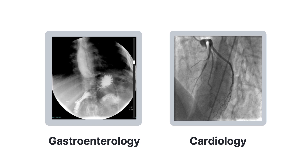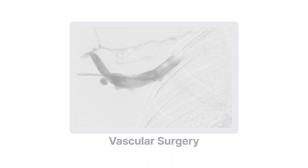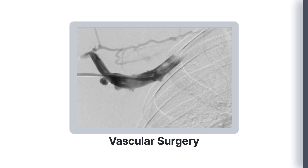Fluoroscopy can be used for both diagnostic and procedural purposes, and fluoroscopic systems are found in a variety of settings. For example, fluoroscopy can be used in gastroenterology to visualize the digestive system and to aid in the placement of feeding tubes. Fluoroscopy is also useful in cardiology procedures such as angiography and in the placement of pacemakers. Fluoroscopic systems can also be used in orthopedics to guide the placement of screws, rods, and other implants, and in urology to visualize the urinary tract and guide the removal of kidney stones.